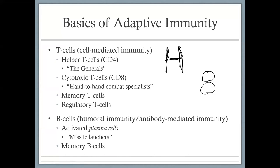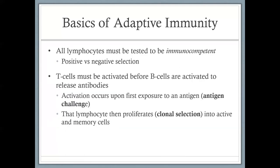Cytotoxic T cells are your hand-to-hand combat specialists — they actually confront the enemy face to face and eliminate it. With B cells, this is known as humoral immunity or antibody-mediated immunity. B cells are activated to become plasma cells, which are like missile launchers — they sit back, push buttons, and launch antibodies. Make sure you connect these terms: helper T cells are CD4, cytotoxic T cells are CD8, B cells are activated into plasma cells, and plasma cells release antibodies.